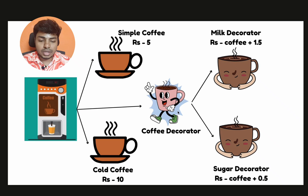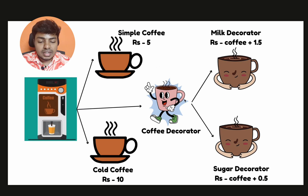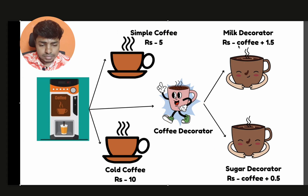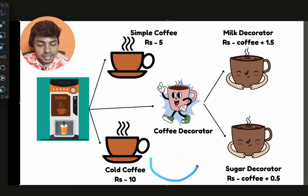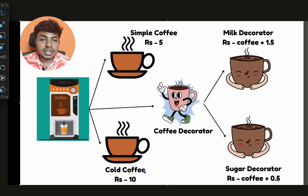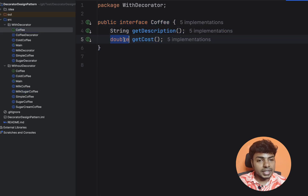Now we look at the diagram. We add a coffee decorator. On top of an existing coffee object, you add an attribute — you can add milk. If you add the decorator, it charges extra. Coffee already exists as an object; on top of it we add milk, or sugar. The two coffee classes — simple coffee and cold coffee — remain as they are. But now we introduce an extra decorator to handle new attributes. We create an abstract class for the coffee decorator.